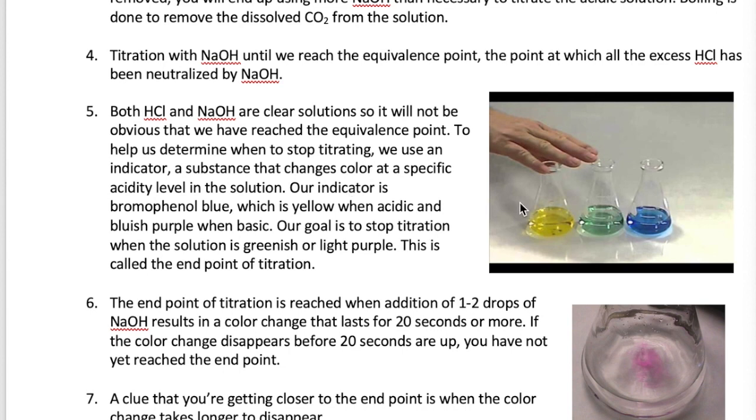The indicator we will use today is bromophenol blue, which has the following colors. When the solution is acidic, it's yellow. When the solution is basic, bromophenol blue is blue or purple. When it goes from one solution to the other, the color becomes green. So our goal is to titrate until our indicator is greenish or light purple.